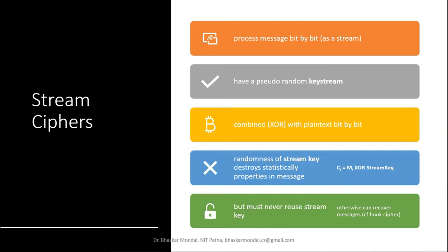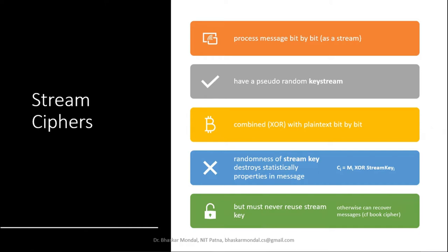An example of how the cipher is generated: C_i (the cipher for the i-th bit) equals the i-th bit of the message XOR'd with the stream key at position i. This is a simple way of doing it. Using XOR we can get the cipher and recover the message back if we know the stream key. But you must never reuse a stream key.